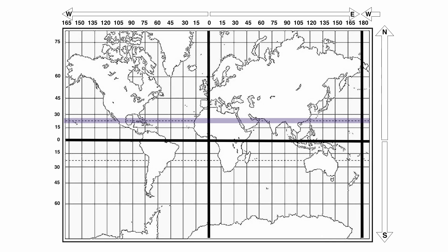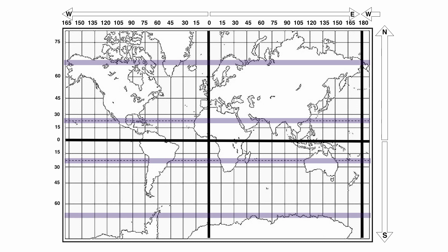Twenty-three and a half degrees north is the Tropic of Cancer. Sixty-six and a half degrees north is the Arctic Circle. Twenty-three and a half degrees south is the Tropic of Capricorn. And sixty-six and a half degrees south is the Antarctic Circle. These latitude lines are going to become important when you start talking about the seasons.